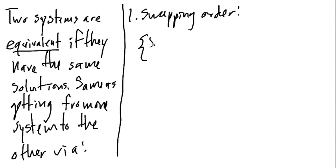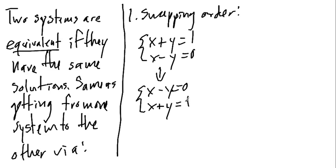One, swapping the order of the equations. So, for example, if I start with X plus Y is equal to 1 and X minus Y is equal to 0, I could change this into X minus Y is equal to 0, and X plus Y is equal to 1. I just swapped the order. It shouldn't be too big of a surprise that those give the same exact solutions, that these have the same solutions as these, because I just swapped the order. That's a cosmetic change.